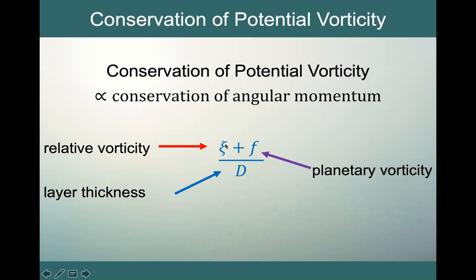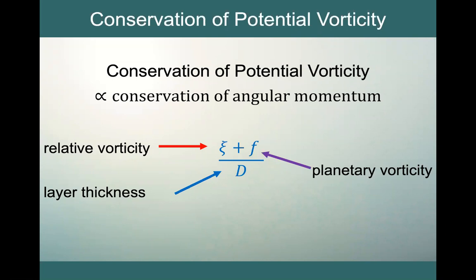So our potential vorticity has multiple components: the relative or local vorticity, which is due to shear, plus the planetary vorticity, which is equal to our Coriolis parameter F and is due to our latitude. So if we change latitude, we change our planetary vorticity. And our layer thickness is the depth of our water column, which we can change as well. We're going to look at a couple of examples and see how we conserve potential vorticity in the ocean.